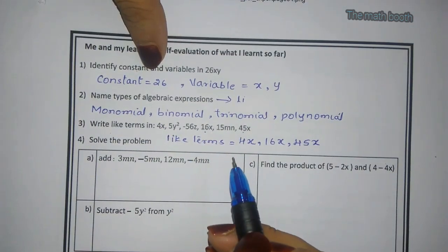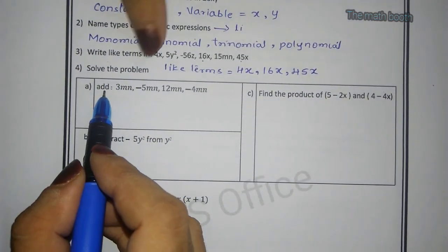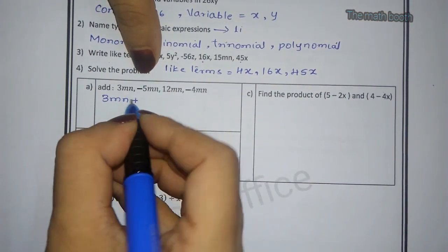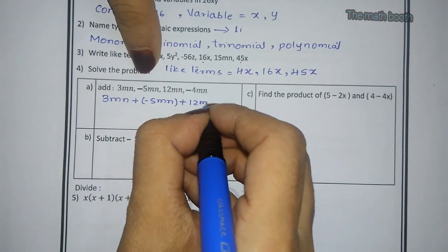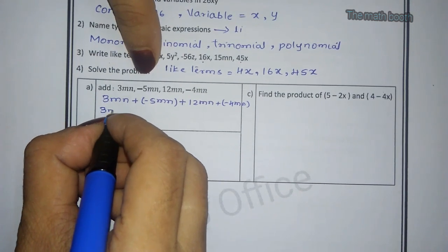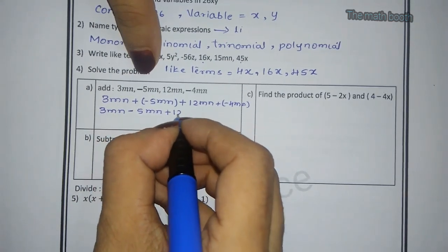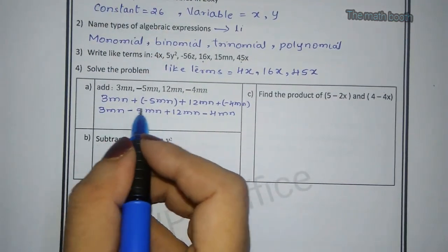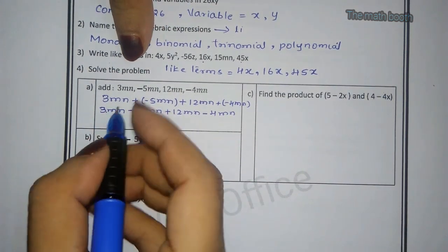Let us see what they have given here. Now solve the problem, add. Let us add this: 3mn plus minus 5mn plus 12mn plus minus 4mn. So what is having same sign we will add. Plus 12mn plus 3mn is 15mn.